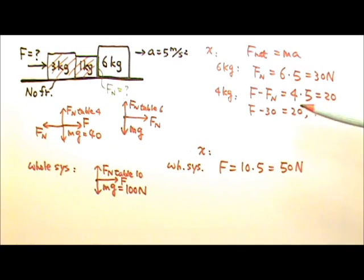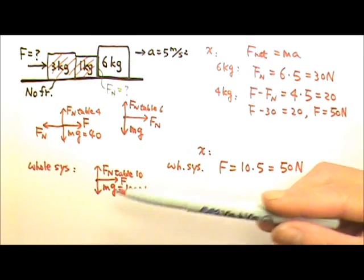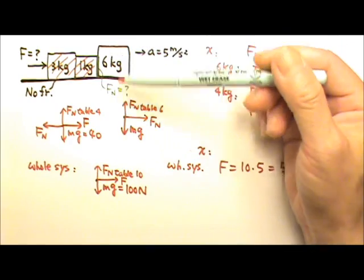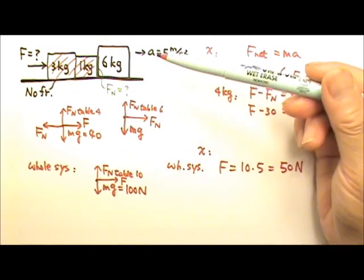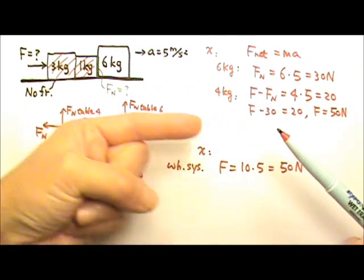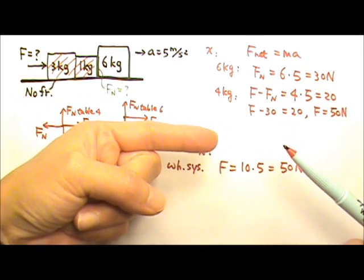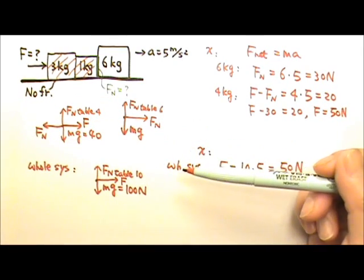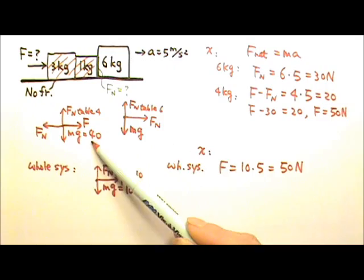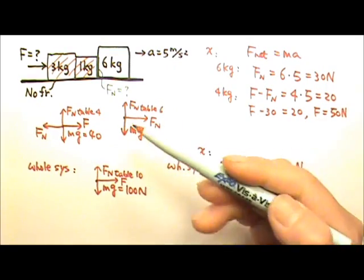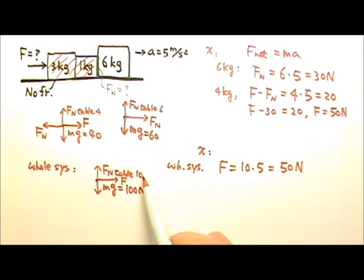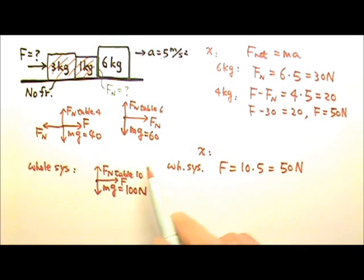Just in case you haven't noticed, we never used the y direction, because the acceleration is completely horizontal and has nothing to do with the vertical forces. The vertical acceleration is zero, meaning upward and downward forces must be equal. So the normal force on the 4kg block must be 40 N, the normal force on the 6kg block must be 60 N, and the normal force on the whole 10kg system must be 100 N — we just didn't need to find them.